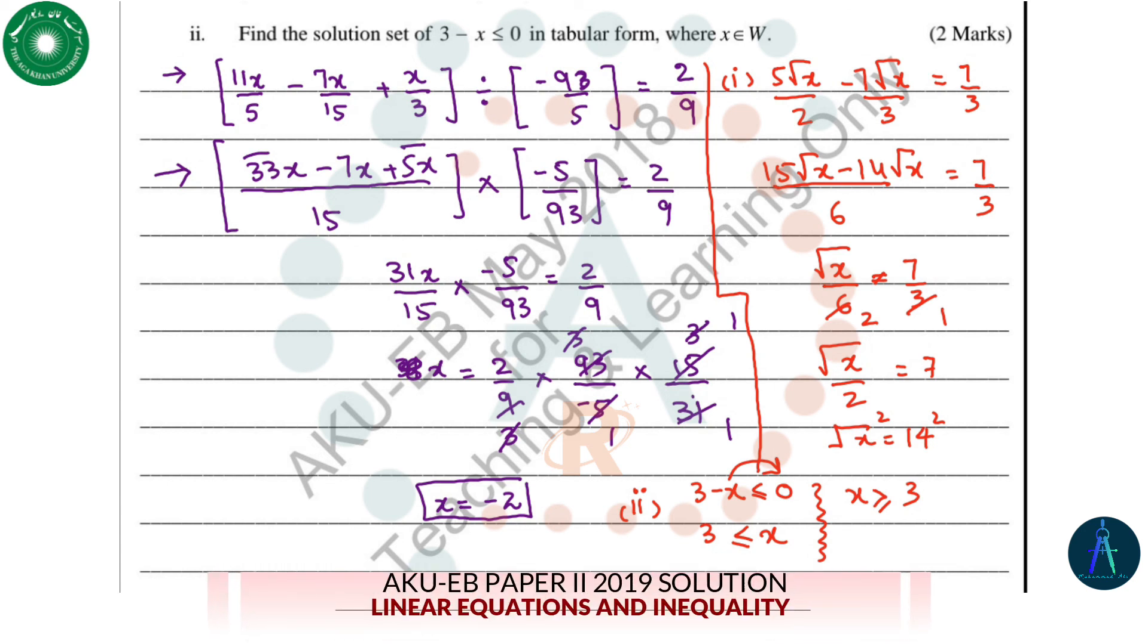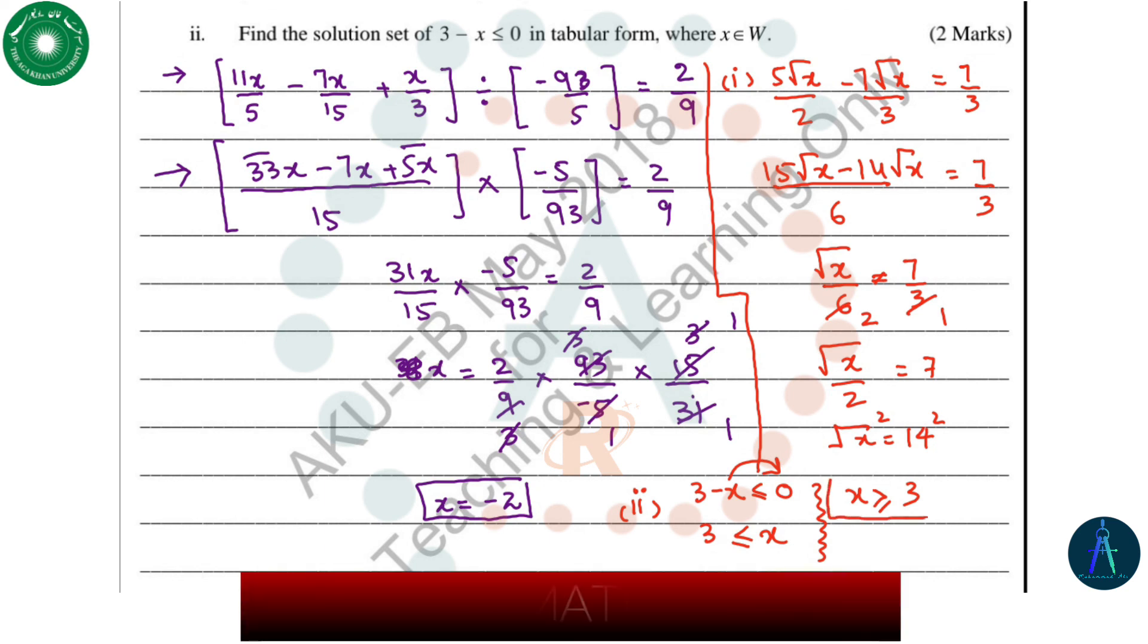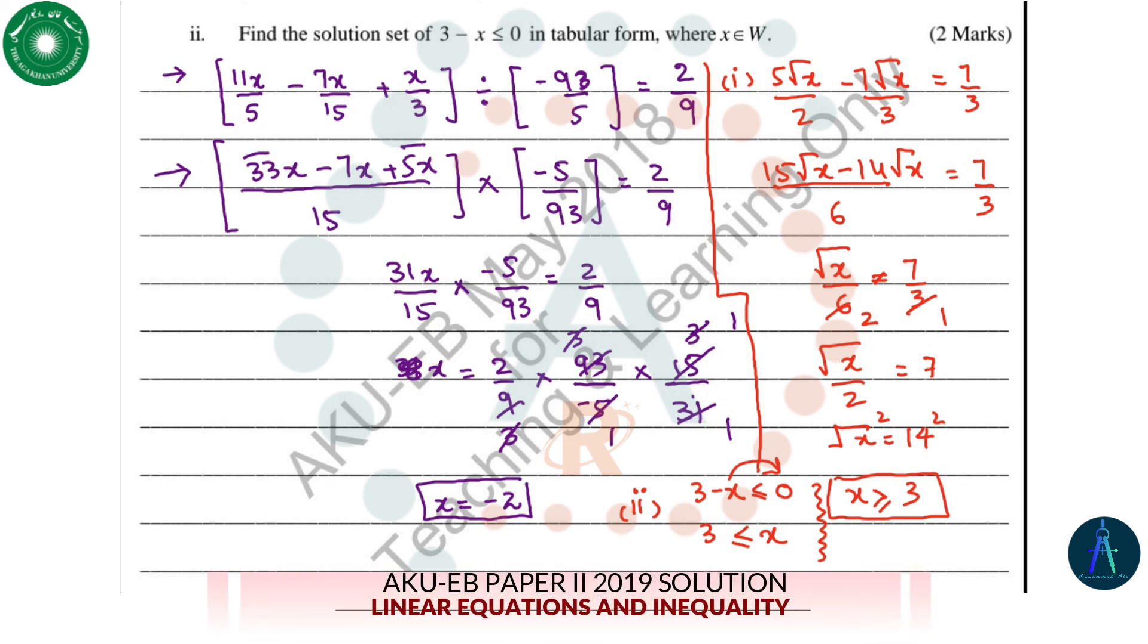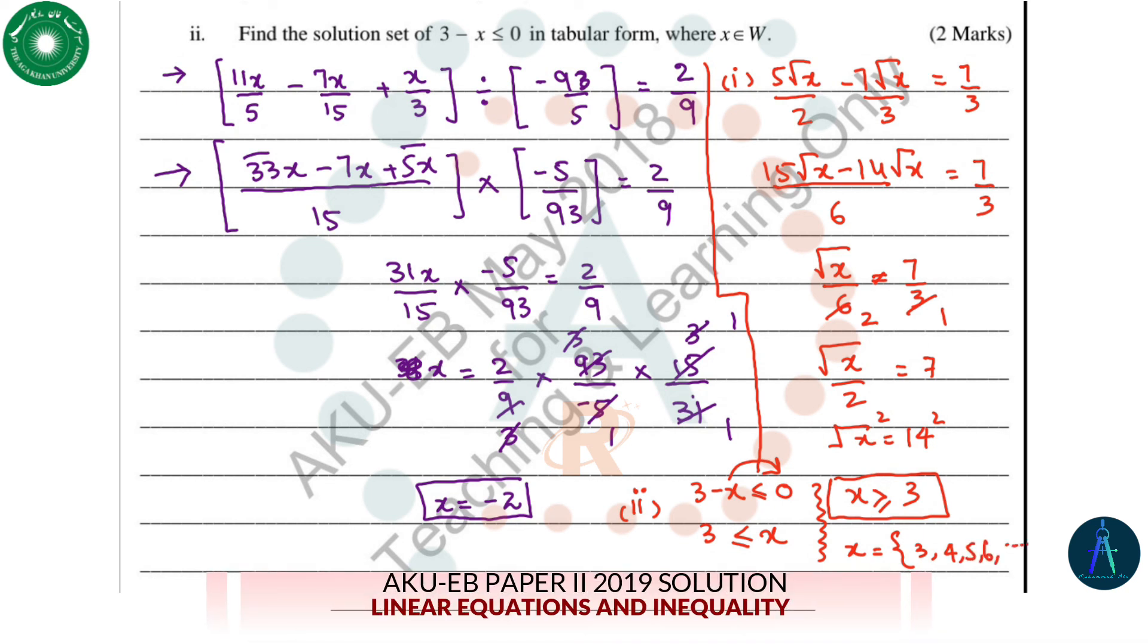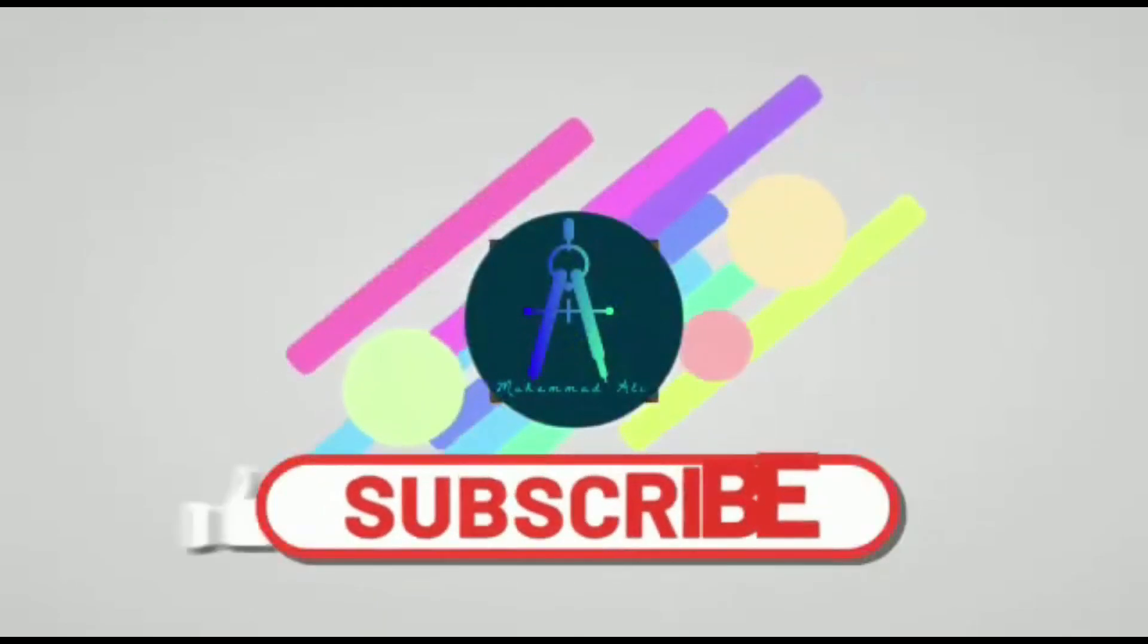This question states that the variable x belongs to whole numbers. So the correct answer we have is x is greater than or equal to 3. The solution set, since our variable x belongs to whole numbers, all the possible values of x could be 3, 4, 5, 6, and so on, because x belongs to whole numbers and all whole numbers that are equal to or greater than 3 are part of the solution set.